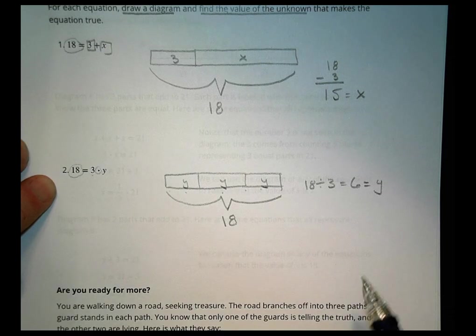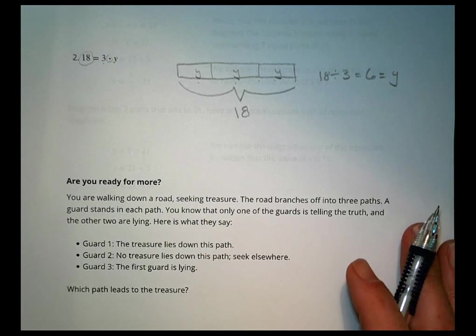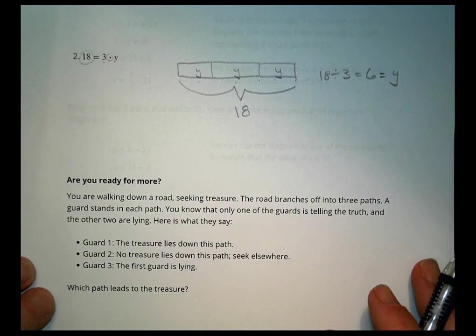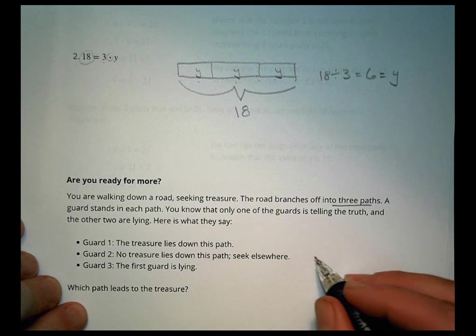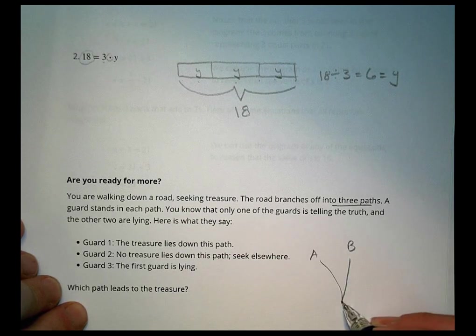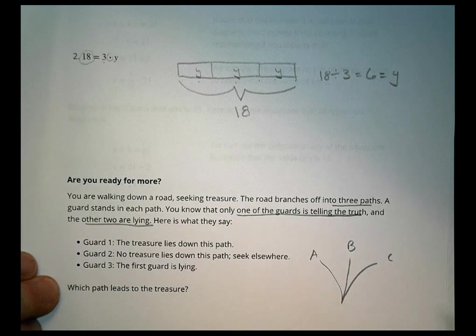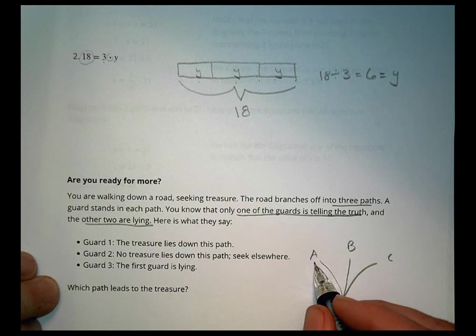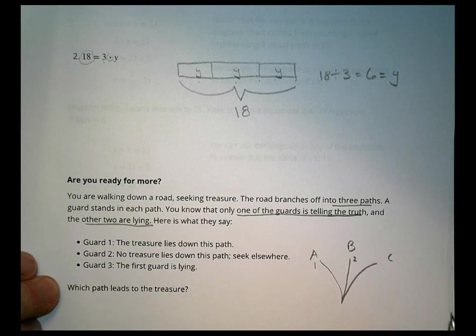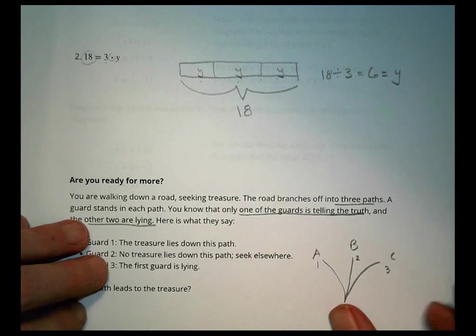'Are you ready for more?' is a fun challenge problem. It says you're walking down a road seeking treasure. The road branches into three paths — A, B, and C. Only one of the three guards is telling the truth; the other two are lying. Guard one says the treasure lies down this path. Guard two says no treasure lies on this path, seek elsewhere. Guard three says the first guard is lying. Use logic to figure out which path leads to the treasure.